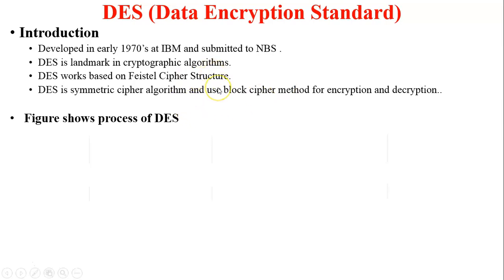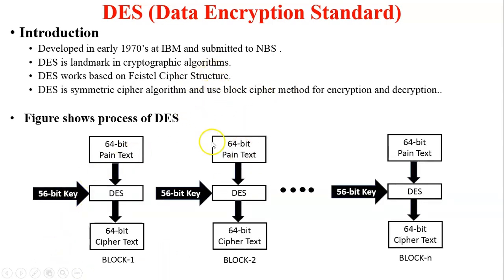Now the figure shows the process of DES. 64-bit plain text is input to the DES and a 56-bit key is also input to the DES. There are two different inputs — one is the key and one is the plain text — and it generates 64-bit cipher text. As per the rules of block cipher, the size of the cipher text and plain text will be the same.